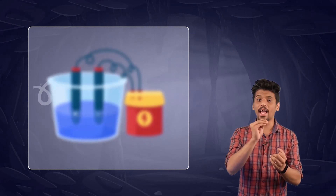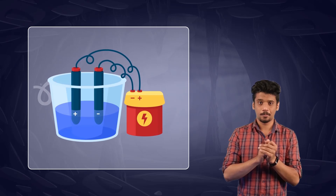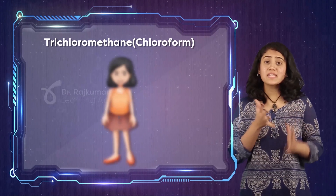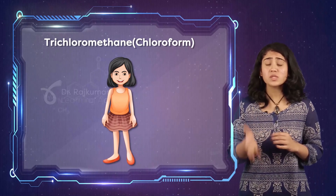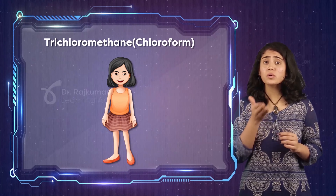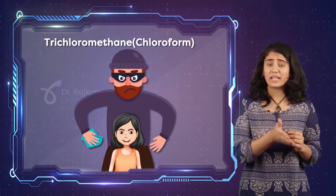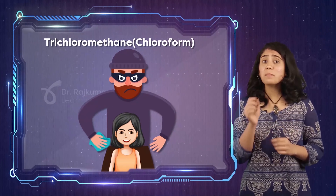If you observe a periodic table, what do we find? That most of the elements over there are metals. We use the process of electrolysis.